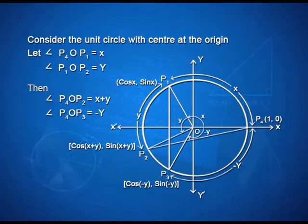In this session, to derive an expression for the sum and difference of angles, let us consider a unit circle with center O at the origin. Let angle P4OP1 be x and angle P1OP2 be y. Then angle P4OP2 is equal to x plus y. Similarly, angle P4OP3 is minus y.